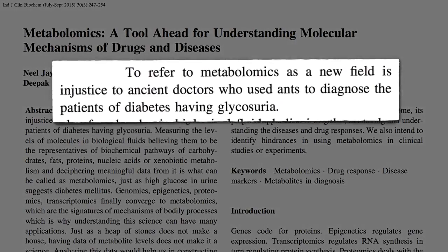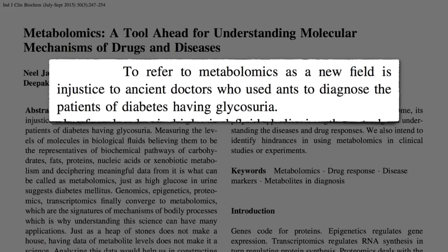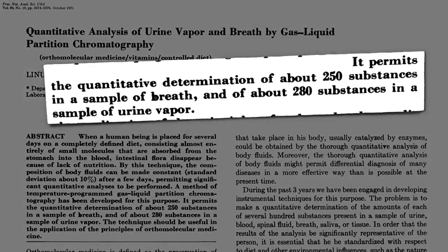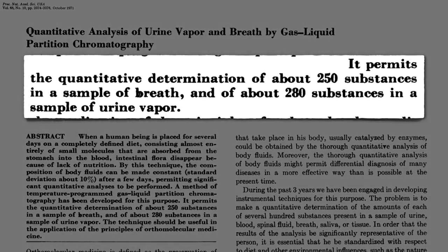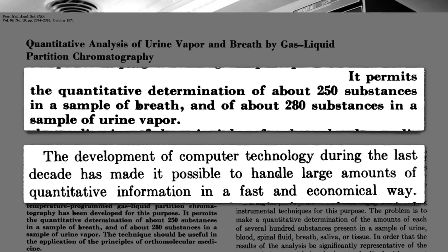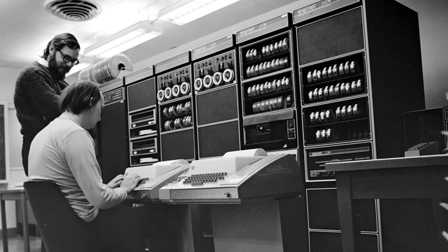To refer to metabolomics as a new field, though, is to do injustice to ancient doctors who used ants to diagnose people with diabetes, because the ants could detect the sugar in their urine. The first modern foray discovered hundreds of substances in a single breath, thanks to the development of computer technology that made it possible to handle large amounts of information. And that was in 1971, a time when computers looked like this.